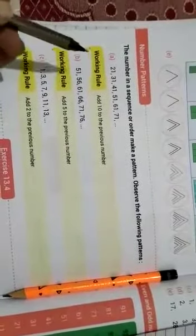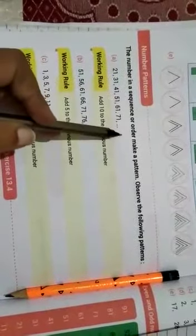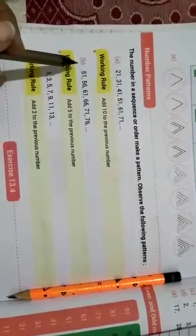The numbers in a sequence or order make a pattern. According to definition, when the numbers are given in a proper sequence or in a proper order, that makes a pattern.